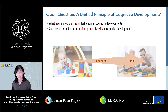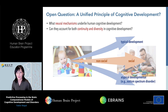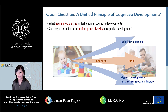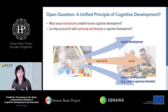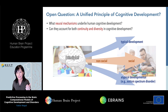Another important aspect is the diversity in cognitive development. We know that some children show atypical patterns — atypical trajectories in development. For example, autism spectrum disorder is a well-known neurodevelopmental condition which appears in infancy. The question is whether there is any unified principle that can account for both the continuity and diversity in development.